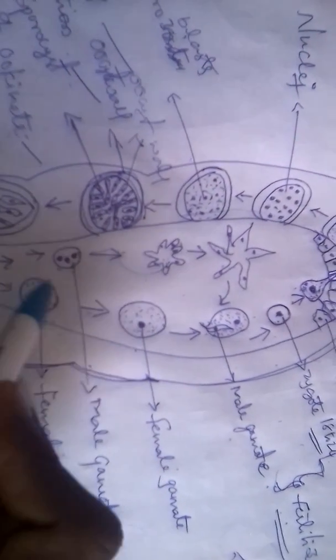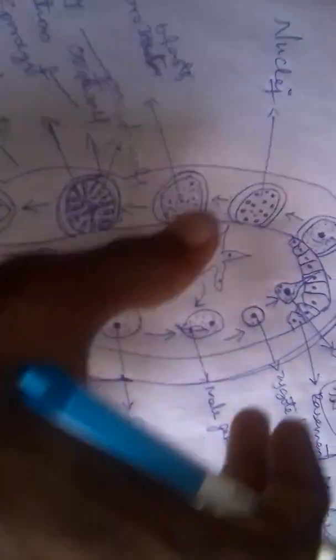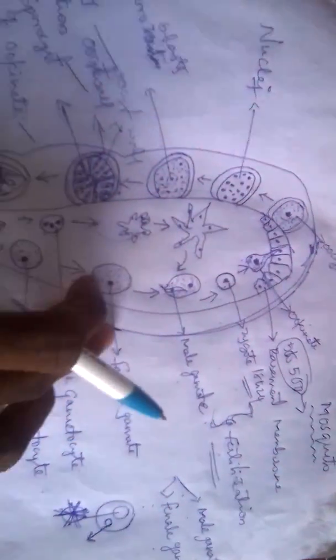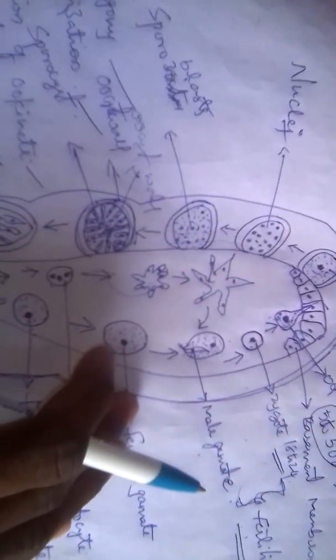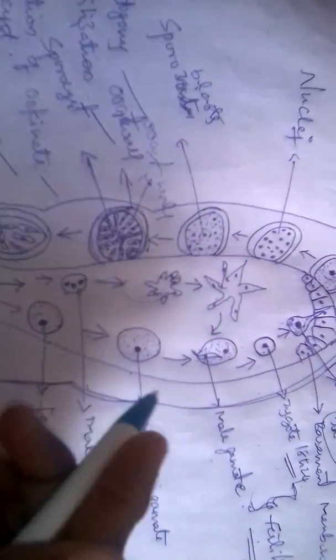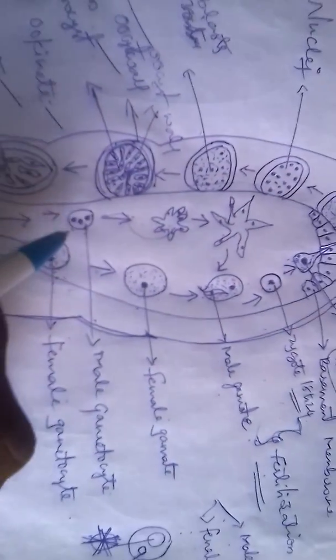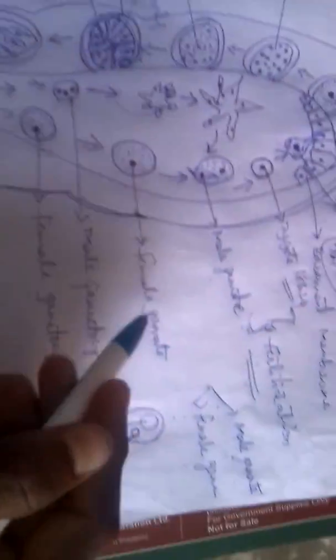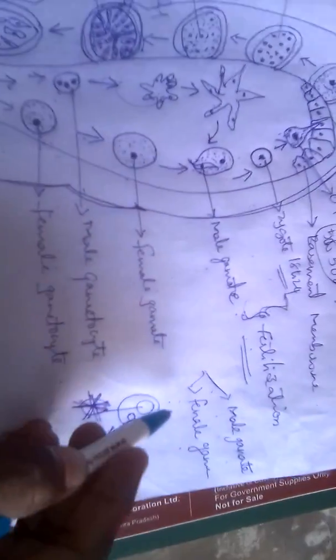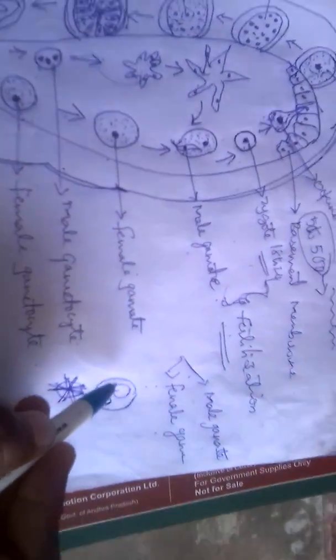These gametocytes are present inside the wall of the crop of the mosquito. This is the crop of the mosquito — the crop is nothing but the stomach. These are the female gametocyte and male gametocyte. The formation of male gamete and female gamete is called gametogony.